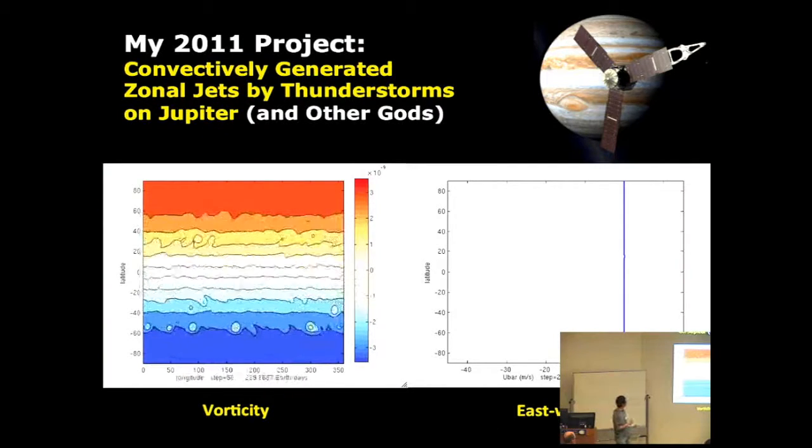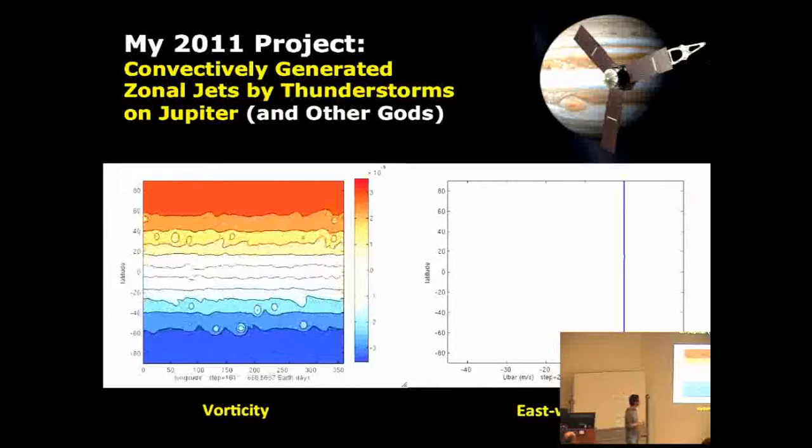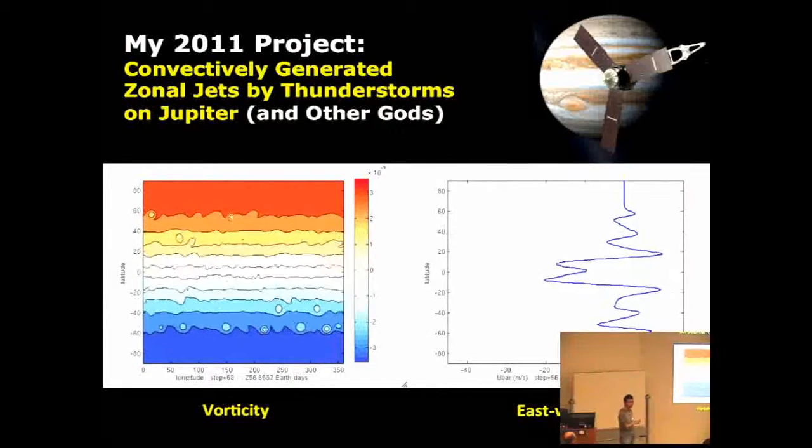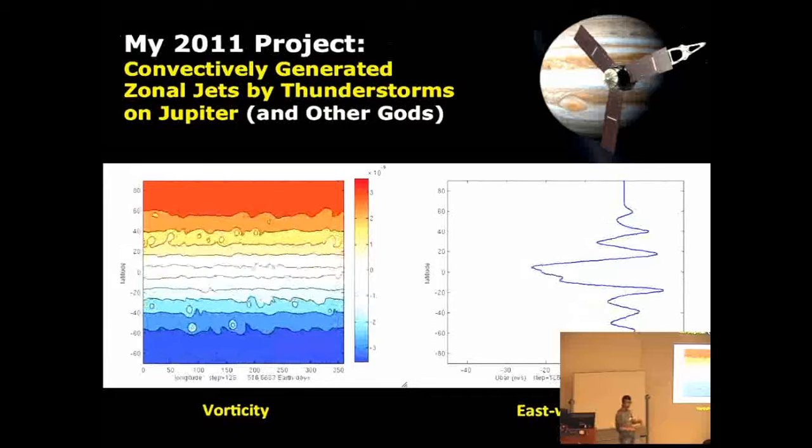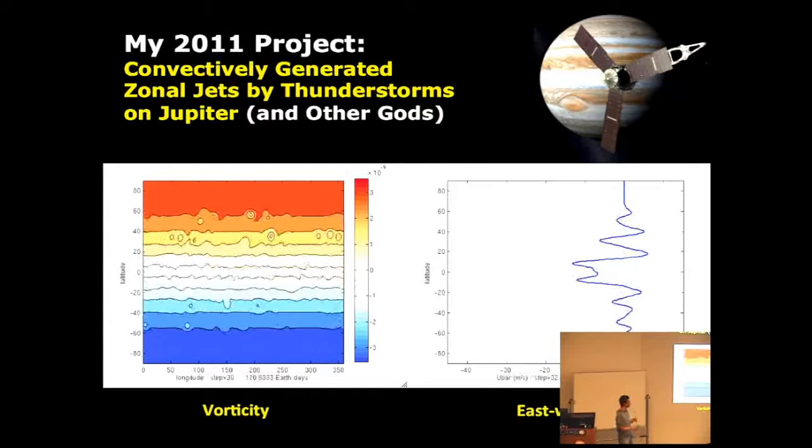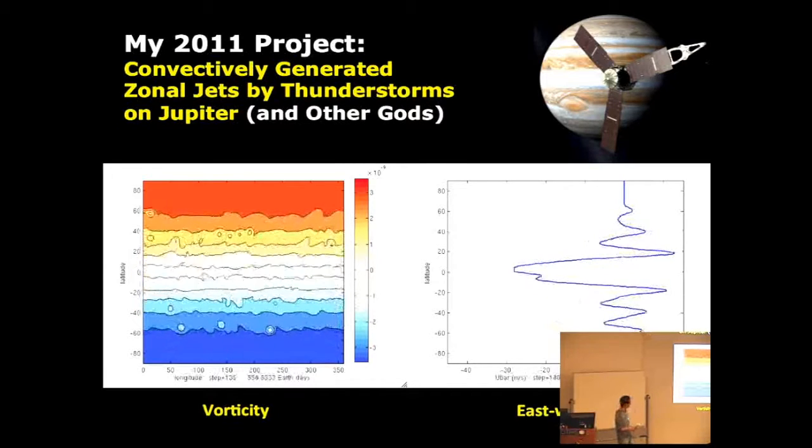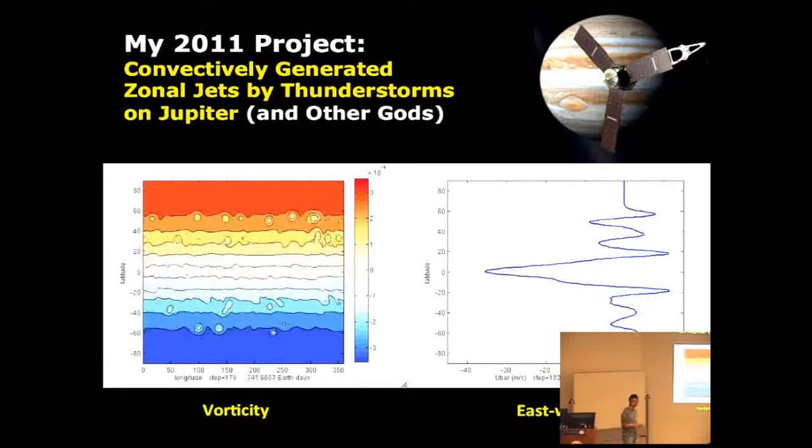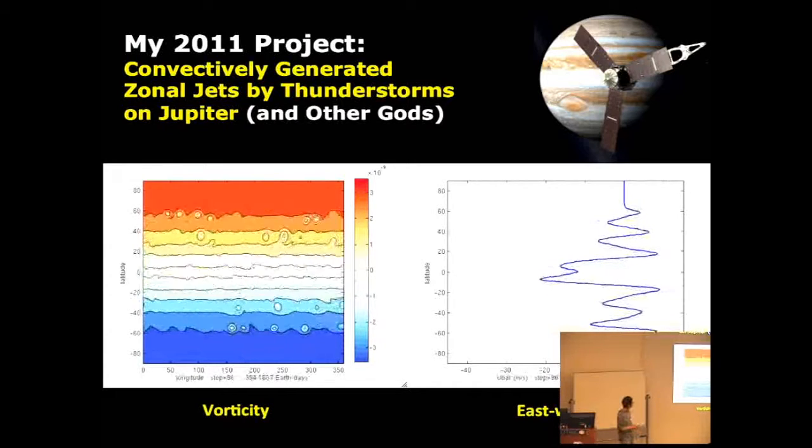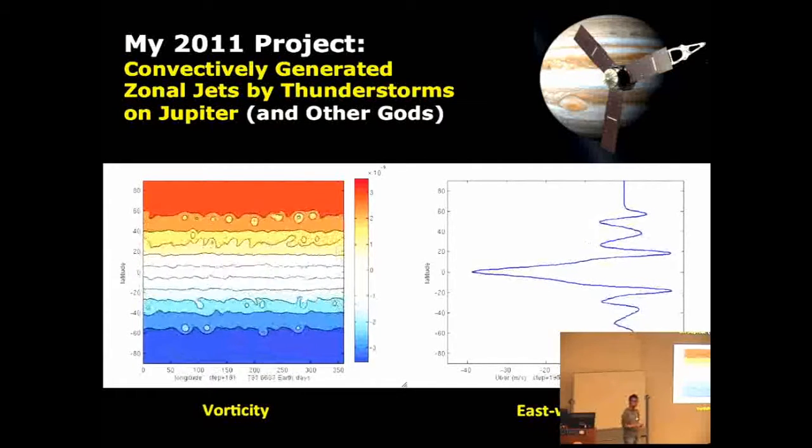This was actually my 2011 project. At that time, Juno was still on the ground. This is called convectively generated zonal jets by thunderstorms on Jupiter. Basically what we did is we took a dynamics model and put thunderstorms in, because Jupiter has a lot of thunderstorms. You can take an image and you see a lot of lightning there. We tried to generate zonal jets and banded structures of Jupiter from these thunderstorms using a very simple two-dimensional shallow water model. I still remember I gave a final talk 14 hours before Juno launch. Now we just need to wait 11 days for Juno to arrive at Jupiter.